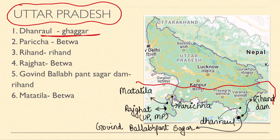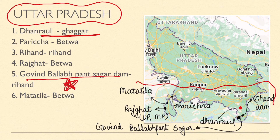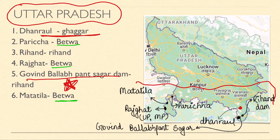In Uttar Pradesh, the most important dam is Govind Ballabh Pant Sagar Dam - extremely important. Along with that is Rihand Dam. Both the Rihand Dam and Govind Ballabh Pant Sagar Dam are on the Rihand River. Additionally there are three dams on the Betwa River: a dam, Rajghat Dam, and Matatila Dam.